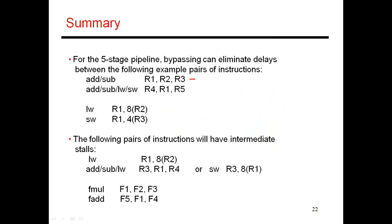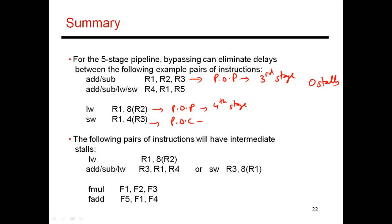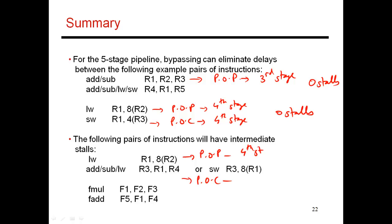To summarize: if the point of production is the third stage (as in a regular ALU instruction), zero stall cycles are needed. If the point of production is the fourth stage but the point of consumption is also the fourth stage (as with a store reading R1), zero stall cycles are needed. But if the point of production is the fourth stage and the point of consumption is the third stage (as with a load followed immediately by a dependent ALU instruction), you must introduce one stall cycle. This concludes the discussion on bypassing and forwarding; the next video will deal with control hazards.